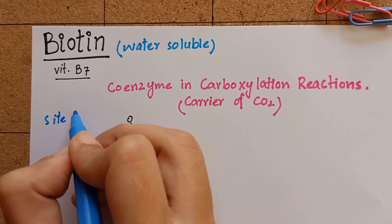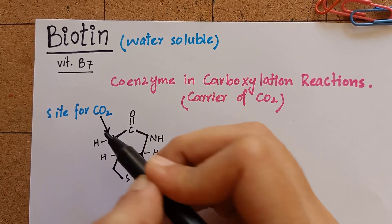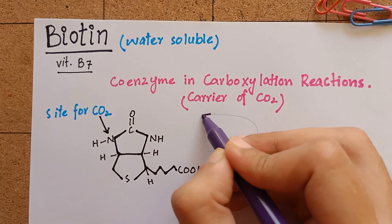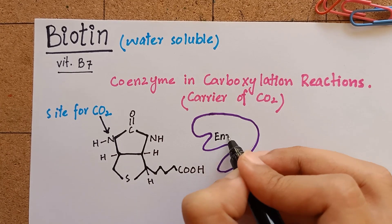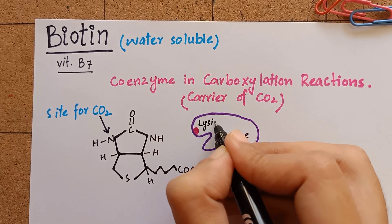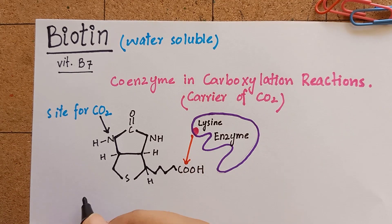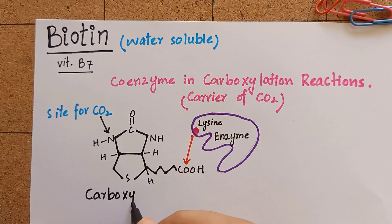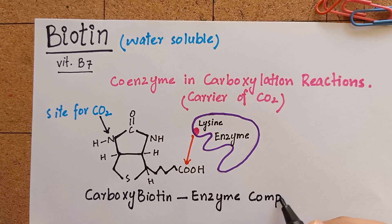This is the site for carbon dioxide attachment, and here it is attached to biotin-dependent enzymes, forming a covalent bond with lysine residues of the enzyme. After the attachment of biotin with carbon dioxide and enzyme, it becomes the carboxybiotin enzyme complex.